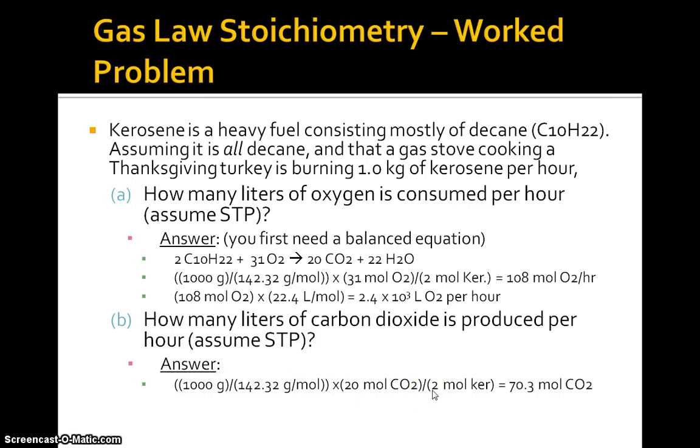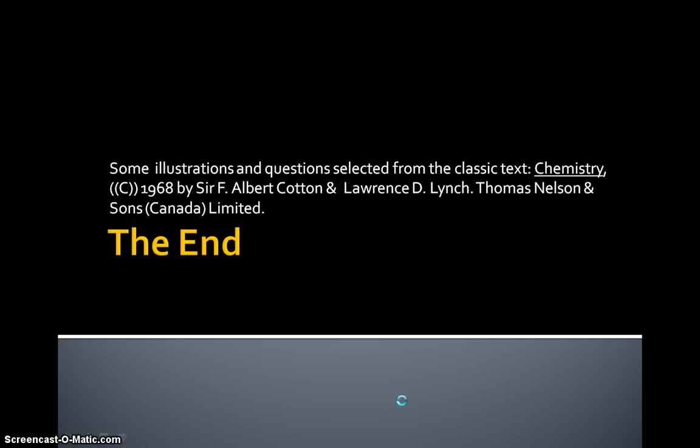So we have 1,000 grams of kerosene, our molar mass, again, stoichiometric ratio. We are converting moles of kerosene into moles of CO2. We get 70.3 moles of CO2. How many liters is that? Multiply by 22.4. We get 1.6 times 10 to the 3, 1,600 liters of carbon dioxide consumed every hour. And that's it.